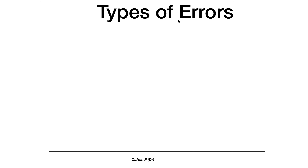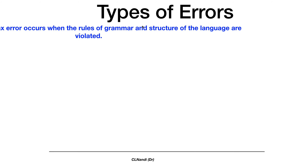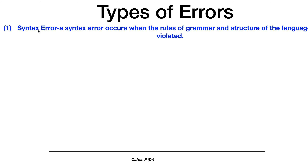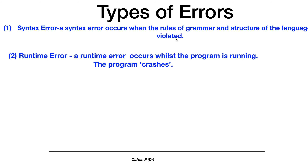So, types of programming errors. There are three types really. First, there is the syntax error, which occurs when the rules of the grammar and structure of the programming language are violated. What happens is you have a program and the program cannot even run because the rules of the grammar and structure of the language are not correct — they are violated.